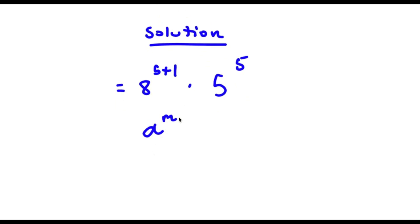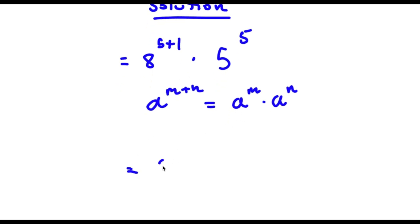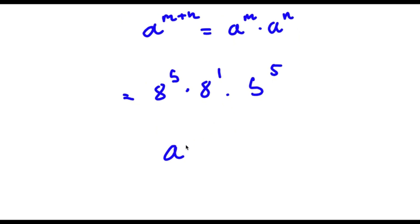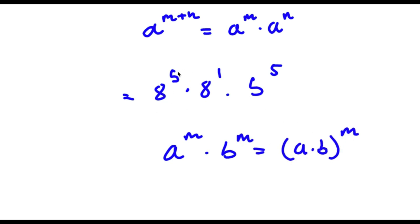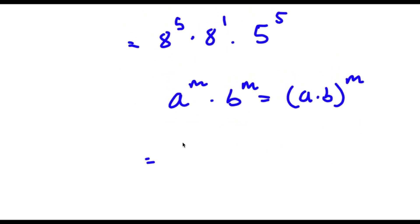Now if I have something in the form a to the power of (m + n), this is the same thing as a^m times a^n. So 8 to the power of (5 + 1) equals 8 to the power of 5 times 8 to the power of 1, and this times 5 to the power of 5. Now if I have a^m times b^m, this is the same thing as (a times b)^m. So 8^5 times 5^5 equals (8 times 5)^5, which gives me 40^5 times 8^1.